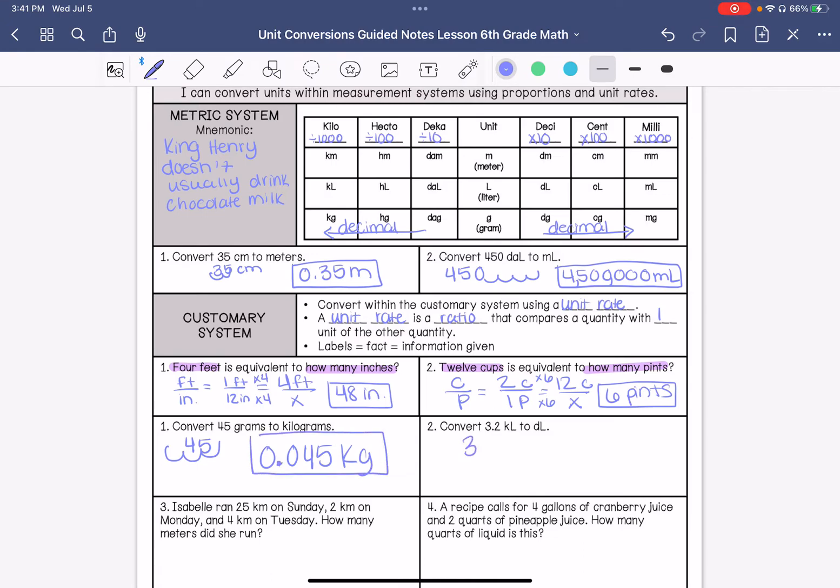3.2 kiloliters to deciliters, that's going to be one, two, three, four. So that's going to be 32,000 deciliters.